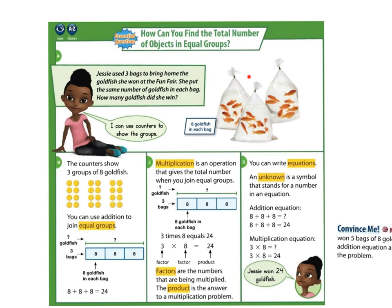Remember, there are 3 bags. We can see our 3 bags of goldfish here. She put the same number of goldfish in each bag. Notice, she has 8 goldfish in each bag. You can show 3 groups of 8 goldfish using counters. Here is a group of 8, another group of 8, and another group of 8. These are equal groups of 8. You can see that it is 8 plus 8 plus 8.